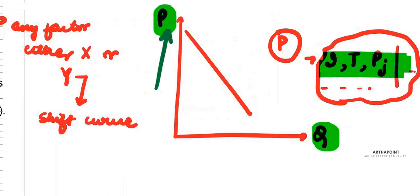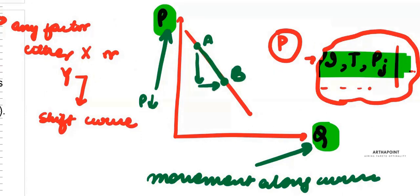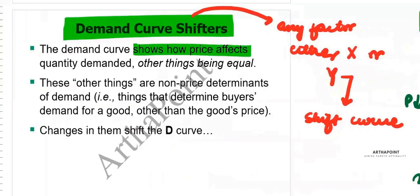Any factor which is on the x or the y-axis will always lead to movement along the curve. For example, if you are at point A and the price of the product decreases, you will move along the curve from A to B because price has reduced, so you will demand more. Any factor on the x or y-axis leads to movement along the curve.